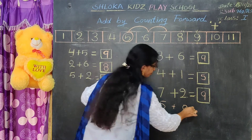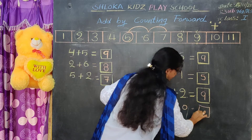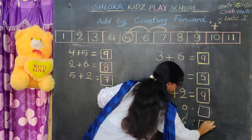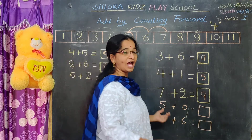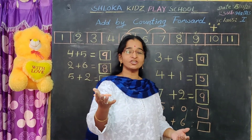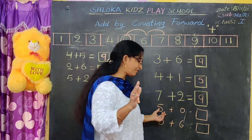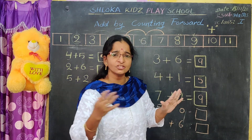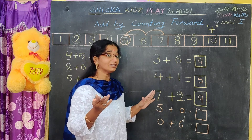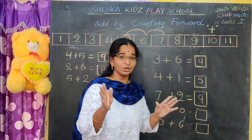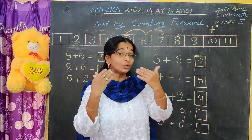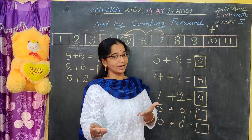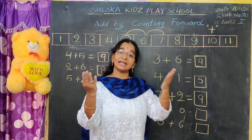Five plus zero is equal to how much? Zero plus six is equal to? Now tell me — you are having five chocolates with you. But I don't have any chocolate with me. Zero doesn't have any value. Whatever number you add to zero, automatically the same number will be there. If any number is added to zero, we will get the same number.